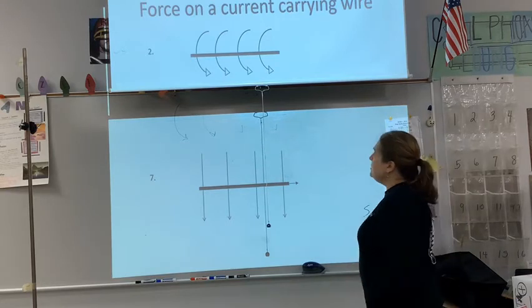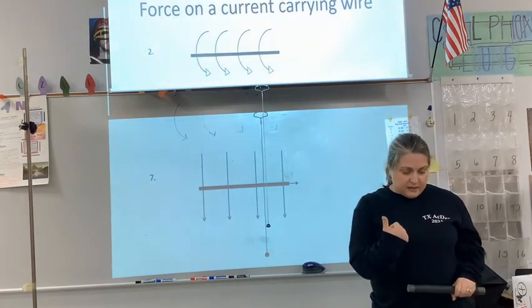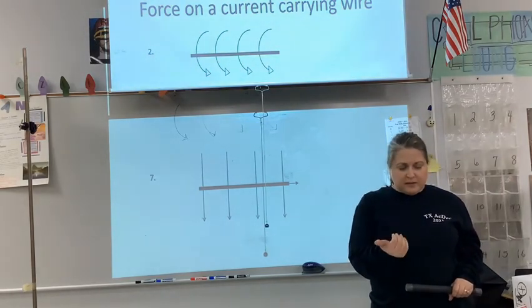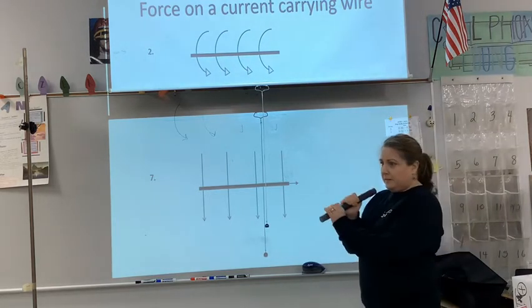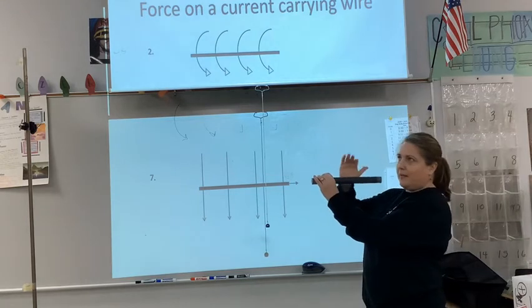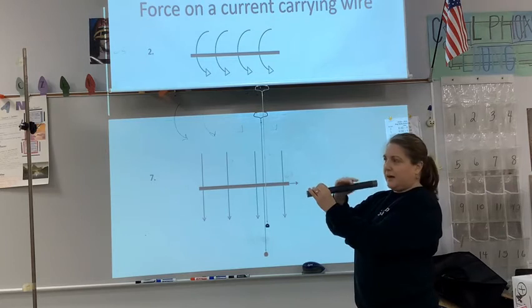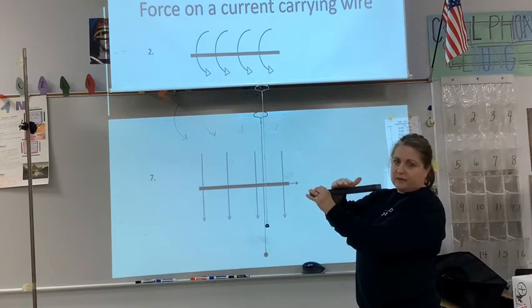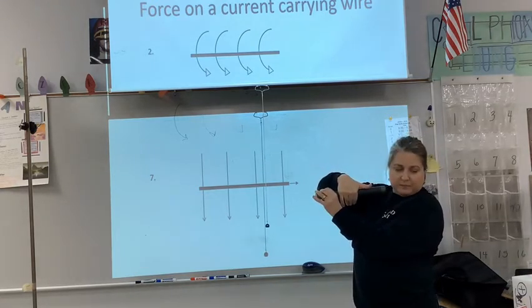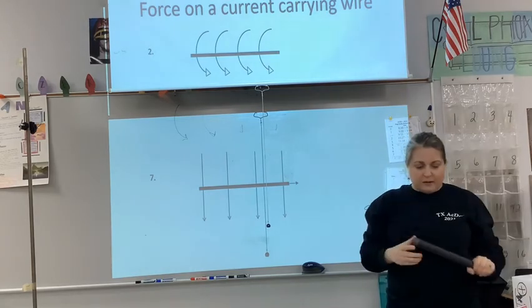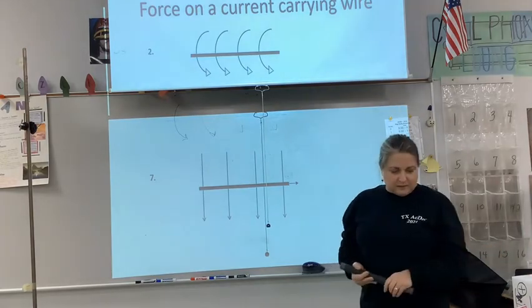In number two, we have a wire where the magnetic field is coming out on top and going in on the bottom. Using my right hand, with the magnetic field out on top and in on the bottom, the current would have to be to the right. However, number two asks for the electron flow, so the electron flow would have to be to the left.